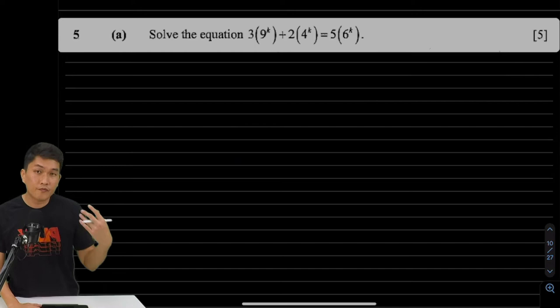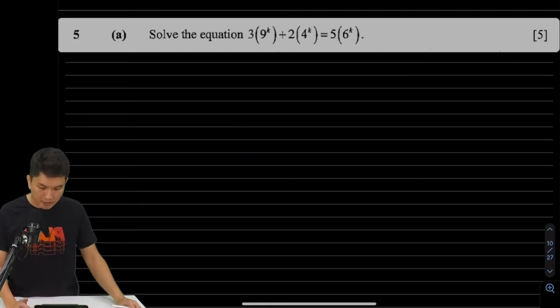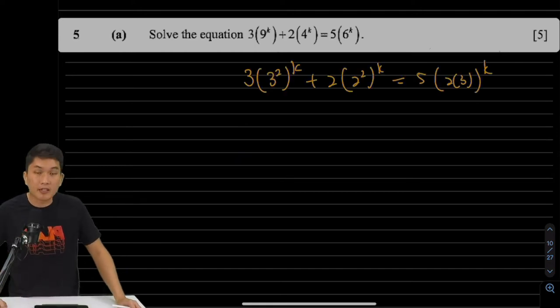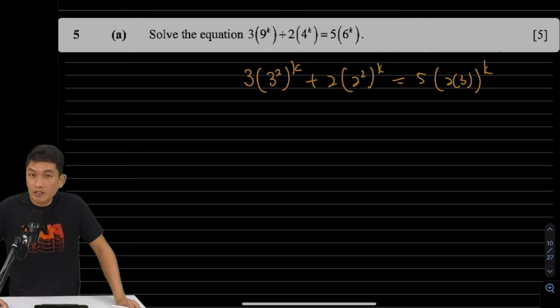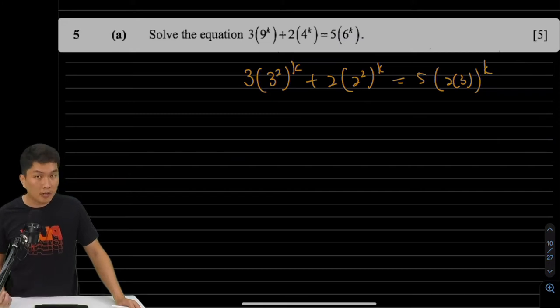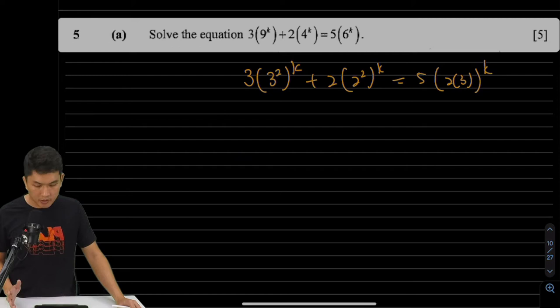So let's look at what most students did. First of all, we want to factorize everything to prime basis. 9 to the power of k can be written as 3 squared to the power of k. 4 to the power of k is 2 squared to the power of k. And 6 to the power of k is 2 to the power of k times 3 to the power of k.